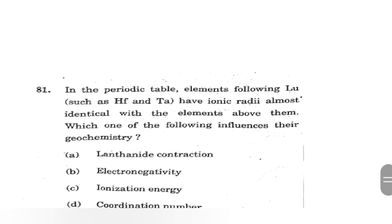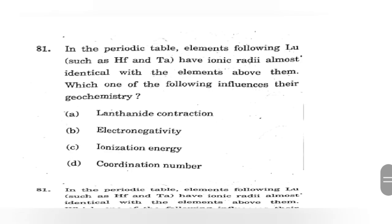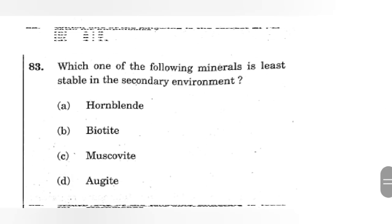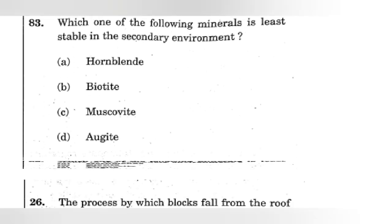In a periodic table, elements following lutetium have ionic radii almost identical with the elements above them. This question is from our very lovable book which is Winter. This is lanthanide contraction. Which of the following is correct silica-oxygen ratio for amphiboles? It is 4 to 11. Which one of the following mineral is least stable in secondary environment? We have read the Bowen's reaction series, right? Opposite to Bowen's reaction series is Goldich series, which is for rate of weathering. Which will weather first? Olivine will weather first, then after that lies pyroxene. Here augite is a pyroxene, so it will weather first. The process by which blocks fall from the roof of magma chamber and sink to lower part is stopping.